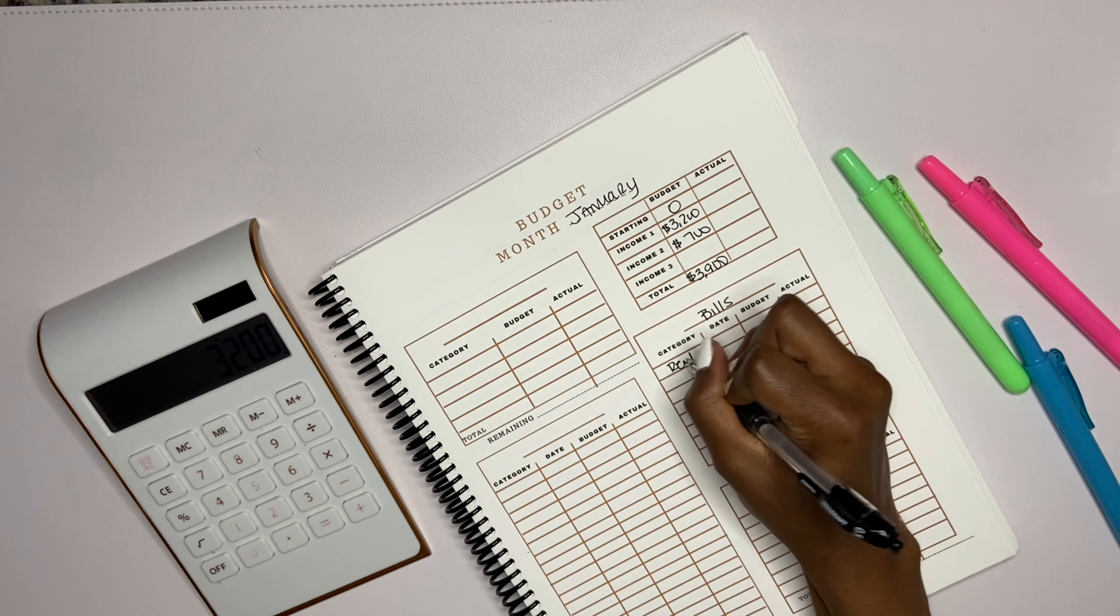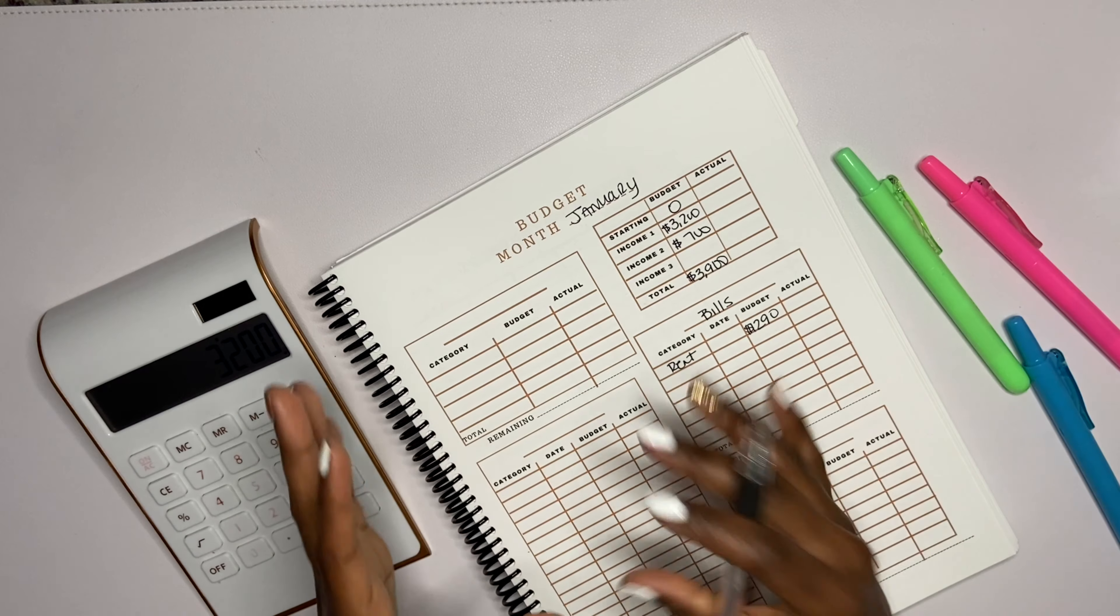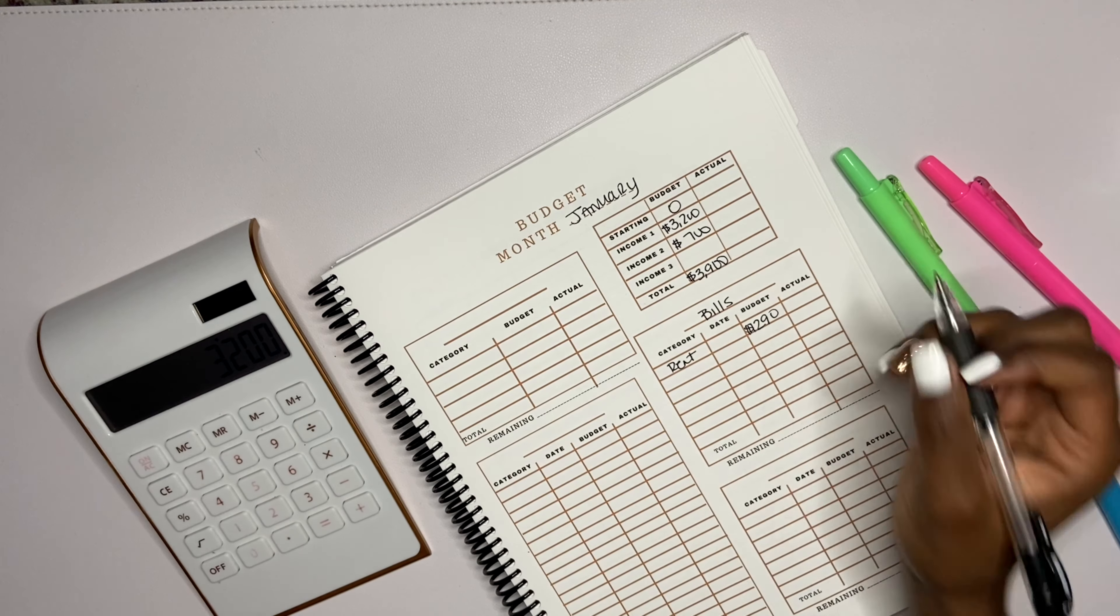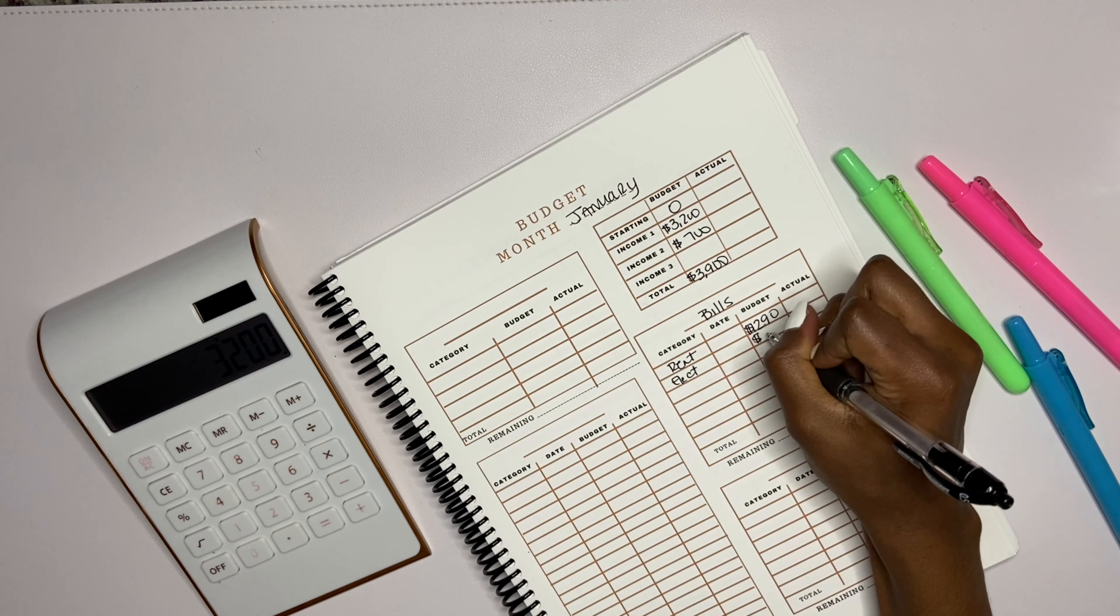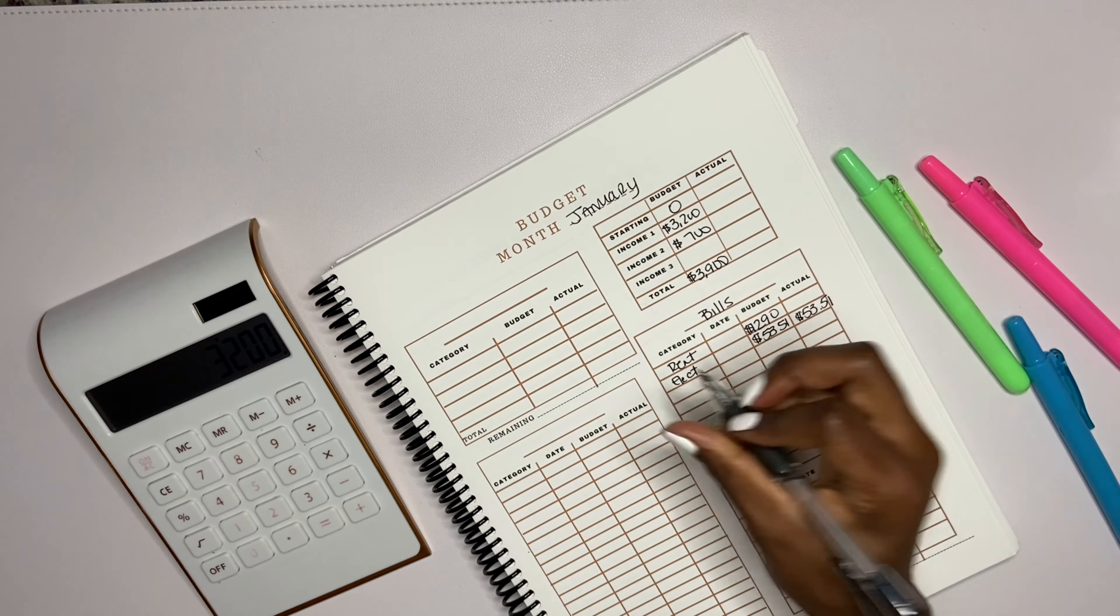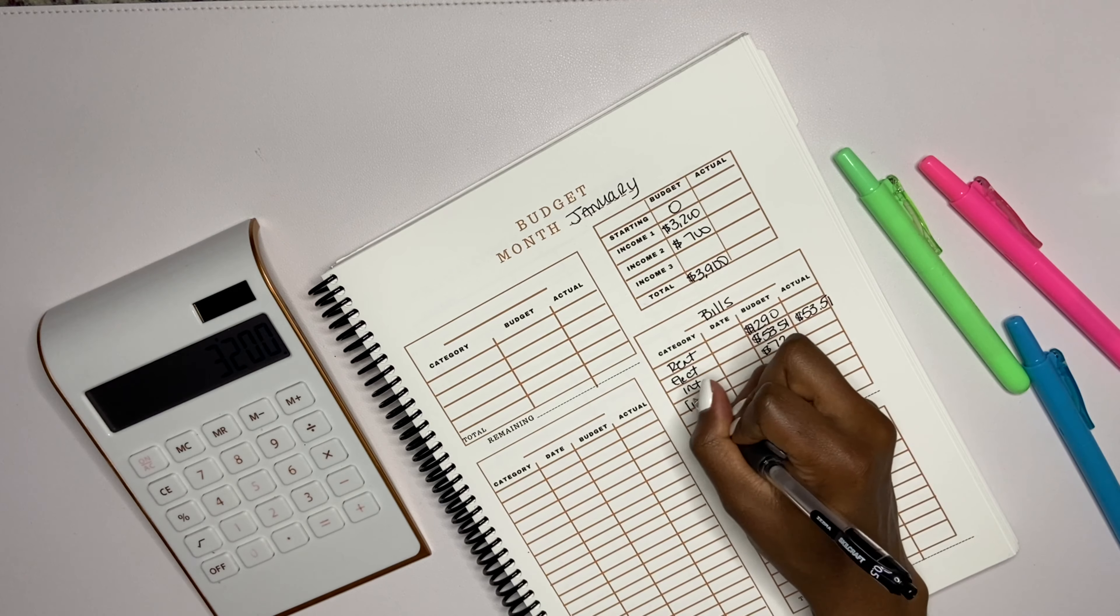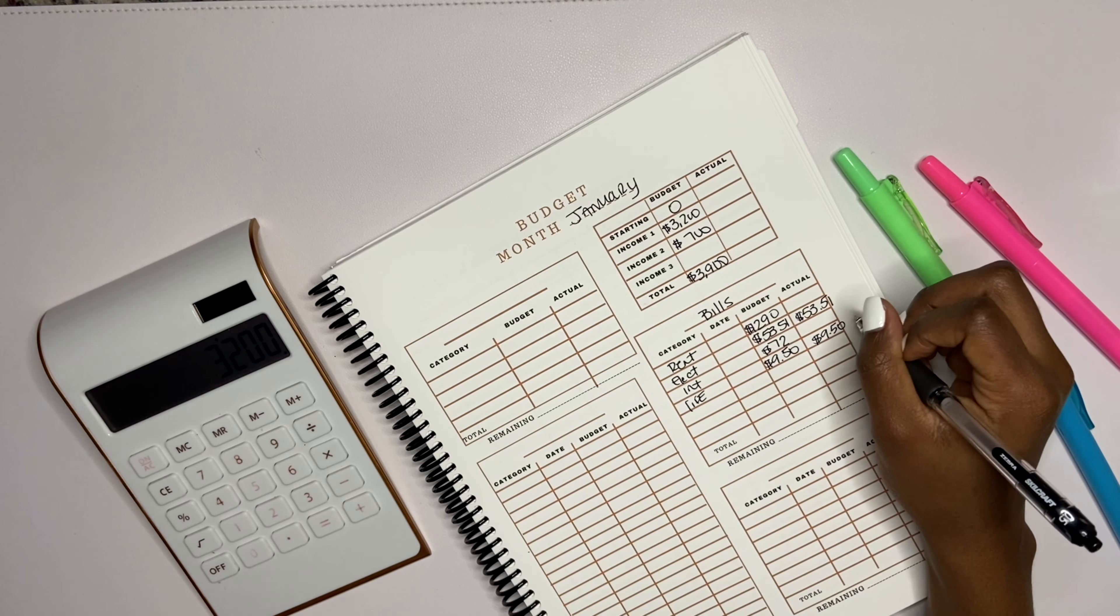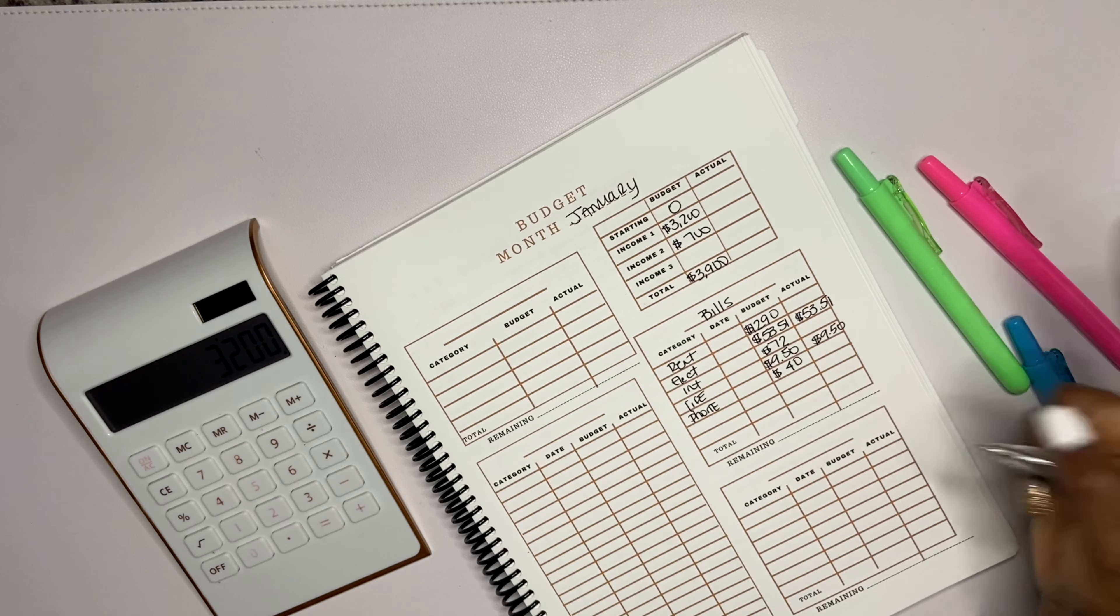First things first, your girl got her bills. My rent, I'm hoping it'll just be $1,290. If you are new and you're like 'how you gonna hope, girl?' - my rent is like $1,220 or something like that, but I have the water, the sewage, and all that stuff. Then my electricity bill I actually already know how much this is - it is $53.51, so my actual is going to be $53.51.